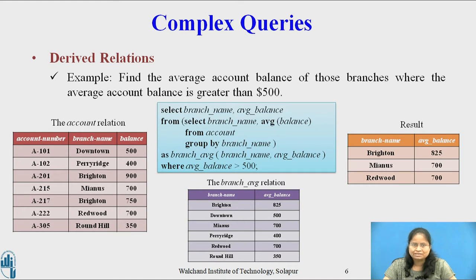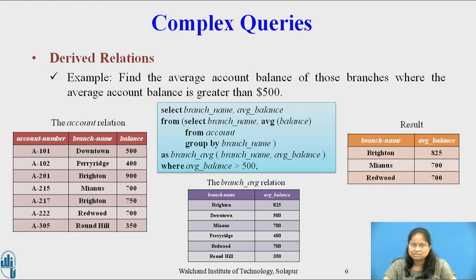In the relation branch_average, the third, fourth, and fifth tuples contain the average balance greater than $500, hence these three tuples are in the final result. While writing this query, we do not need to use the HAVING clause, since the subquery in the FROM clause computes the average balance and its result is named branch_average, so we can use the attributes of branch_average directly in the WHERE clause.